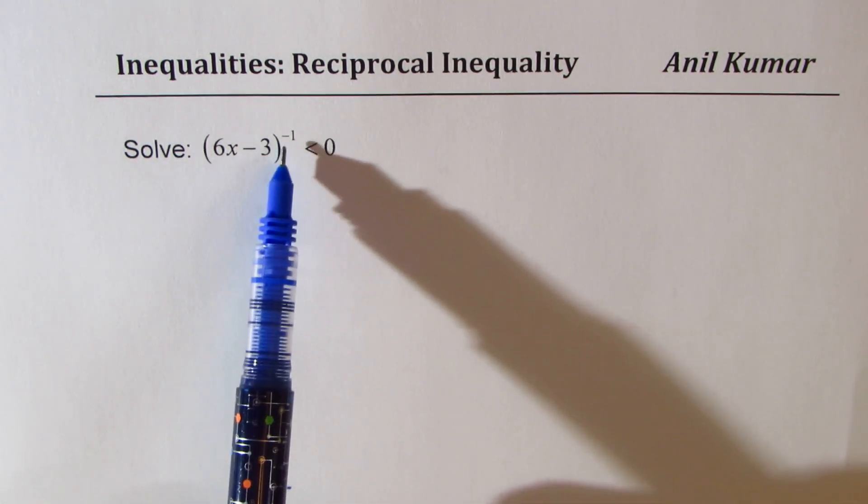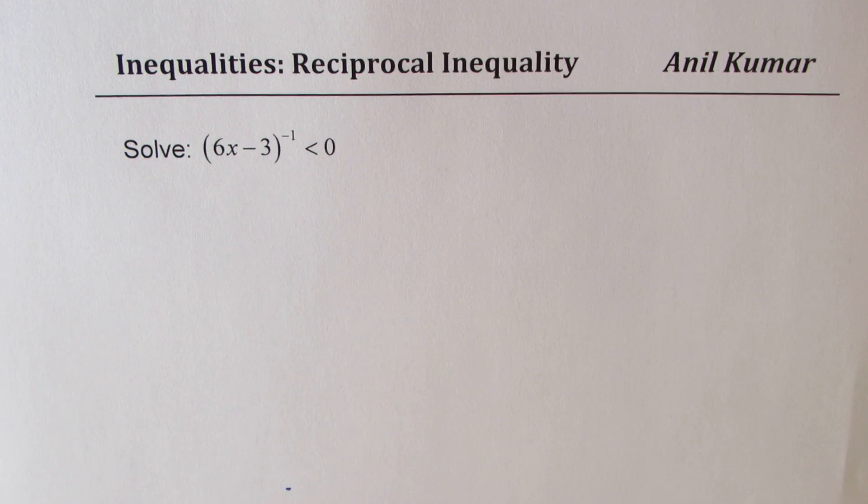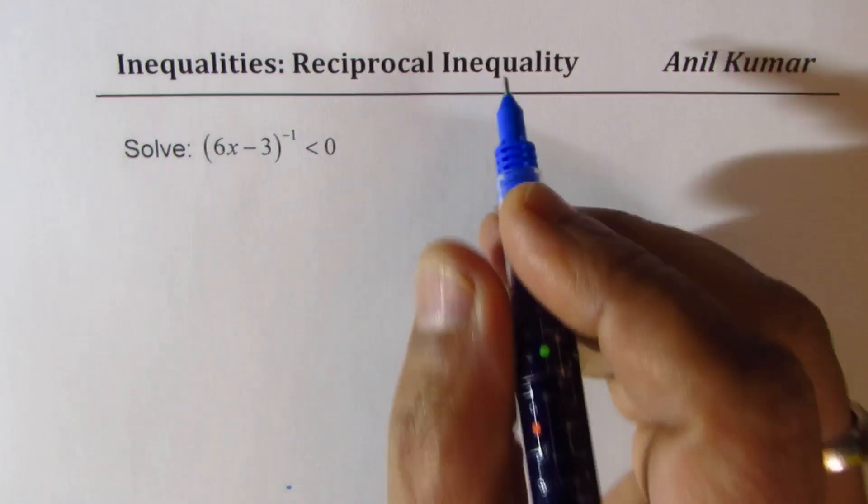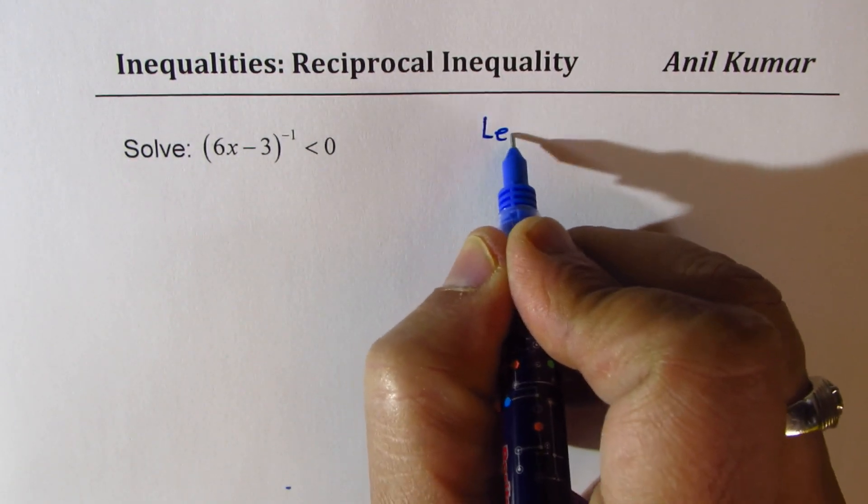6x minus 3 reciprocal is less than 0. Let us first try to understand the concept.